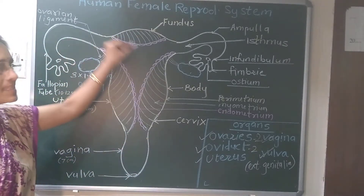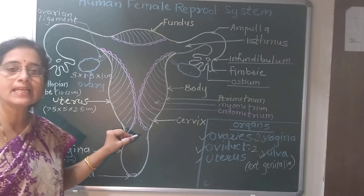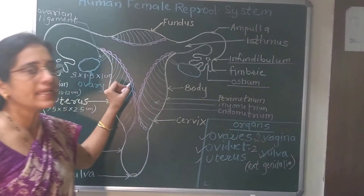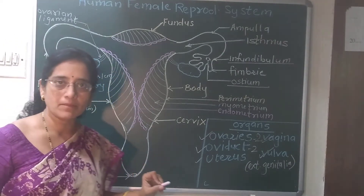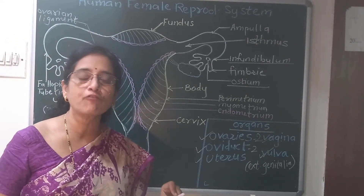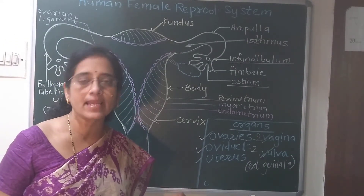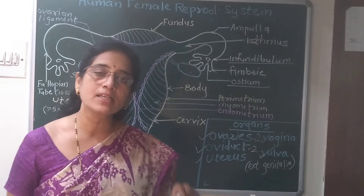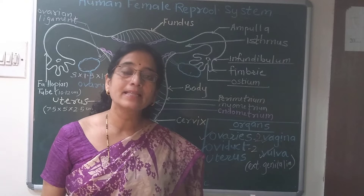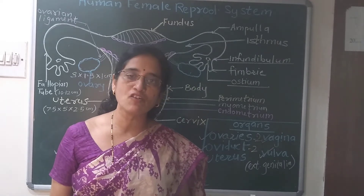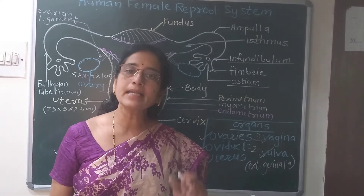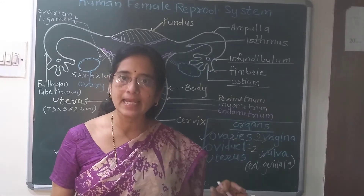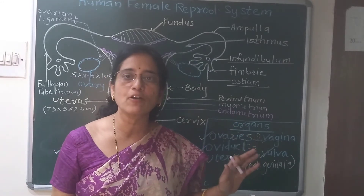You can see this system. It is present in the pelvis region of the female body. It is a completely internal system — no organ is seen from outside. As in men, we studied testes present in scrotum and penis, which are the external organs of the male reproductive system. But in females, the complete system is present on the internal side of the body.